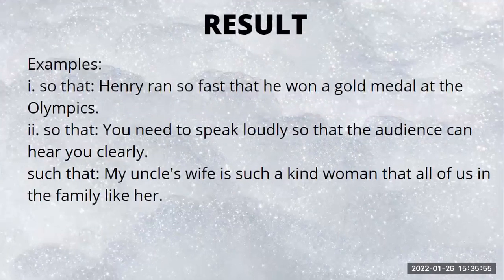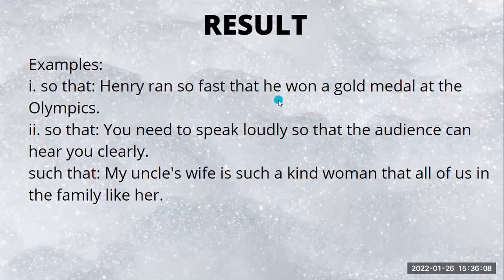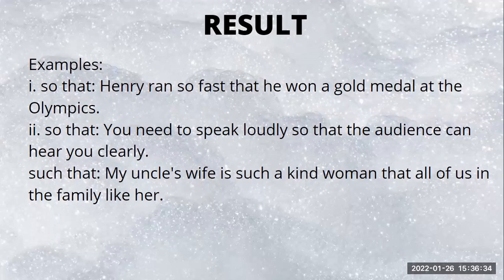Next is the subordinating conjunction of result — it indicates the result or effect of a previous action. First: 'so...that': 'Henry ran so fast that he won a gold medal at the Olympics.' Note that in this construction, 'so' and 'that' are separated by a descriptor. Compare this with 'so that' used together for purpose: 'You need to speak loudly so that the audience can hear you clearly.'